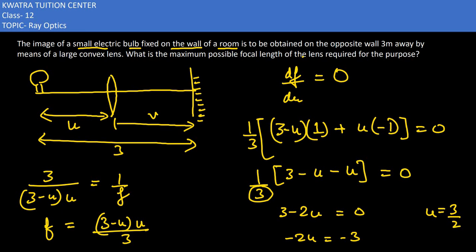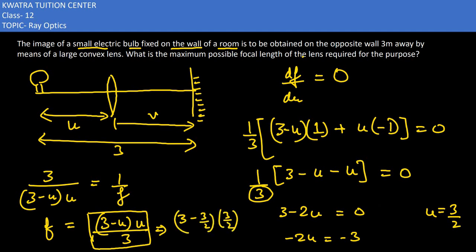Substituting u equals 3/2 into f equals (3 minus u) times u over 3: we get (3 minus 3/2) times (3/2) over 3, which is (3/2) times (3/2) over 3, giving 9/4 divided by 3, equals 3/4. So f max equals 0.75 meters. That's how you solve this one — it was a bit different from what we've done so far.